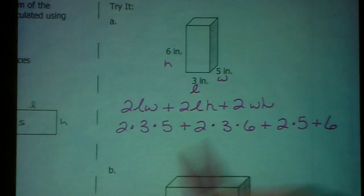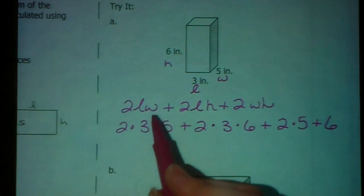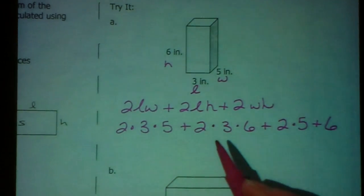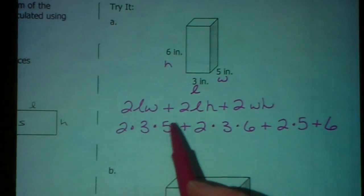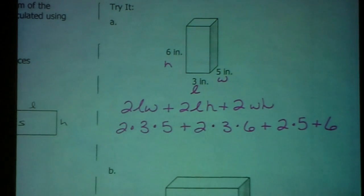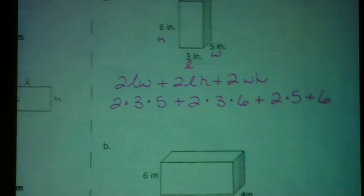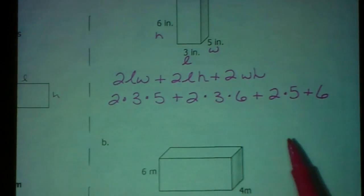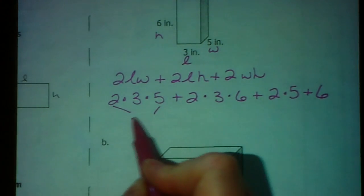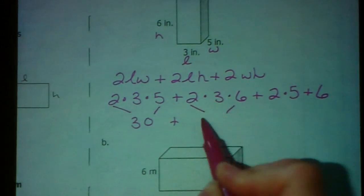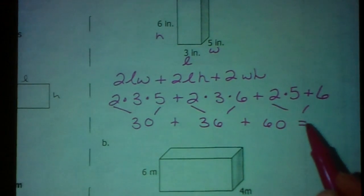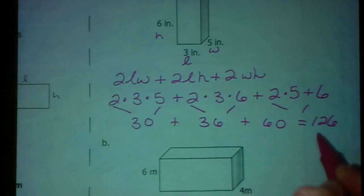You might be asking why there's a two in every single one. You can only see three of the sides of this rectangular prism, but there are three other sides you just can't see. The top and bottom are the same, the left and right are the same, and the front and back are the same. So we use a two to double the calculation. If you type this whole thing into your calculator, it knows order of operations — it will calculate all the multiplication first, giving you 30, 36, and 60. Type it all in.